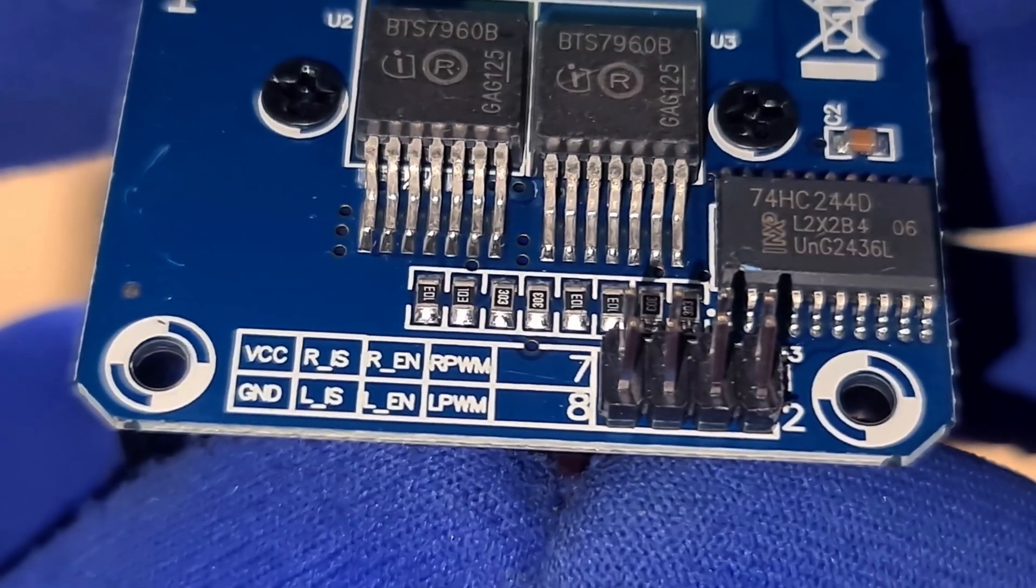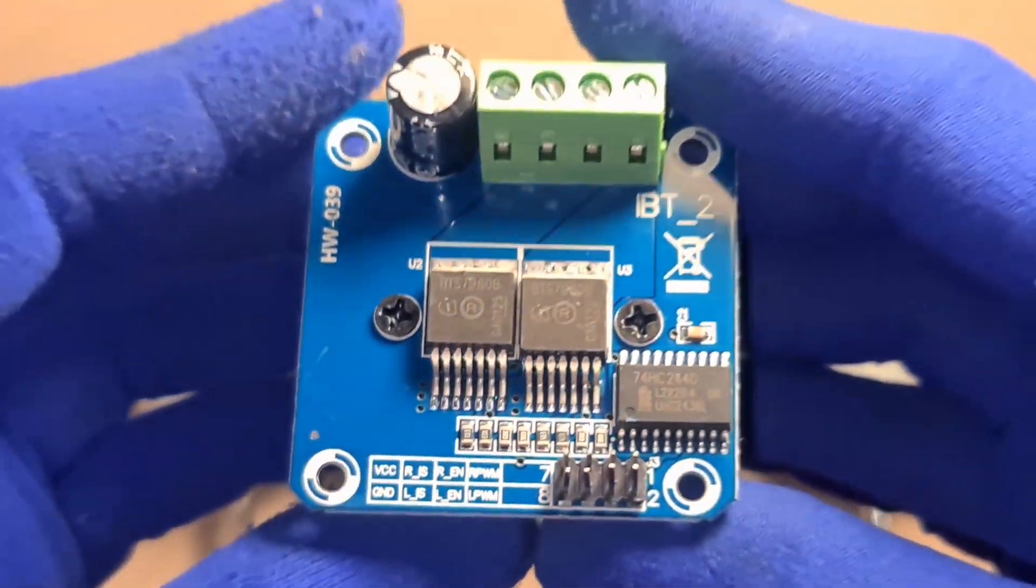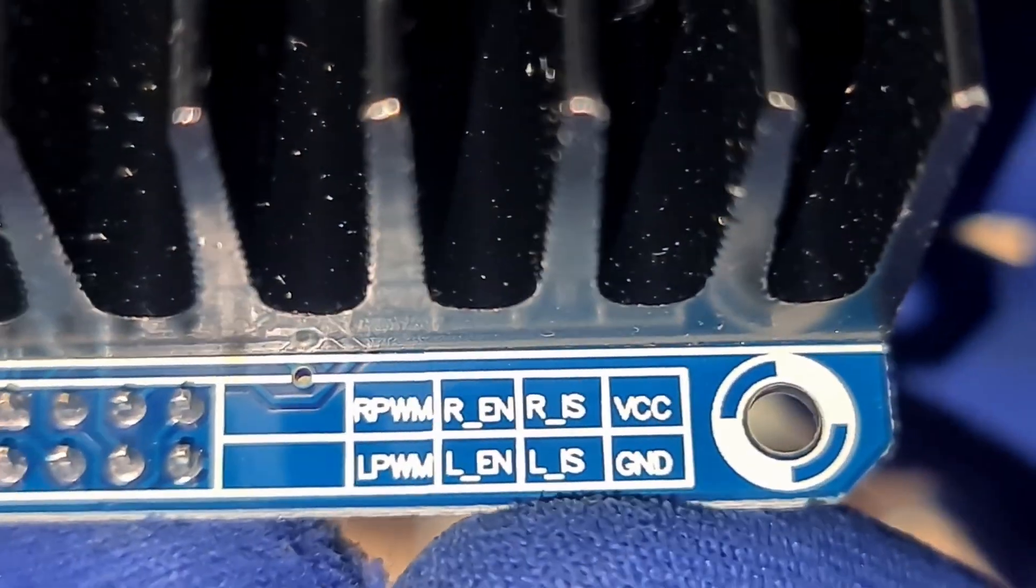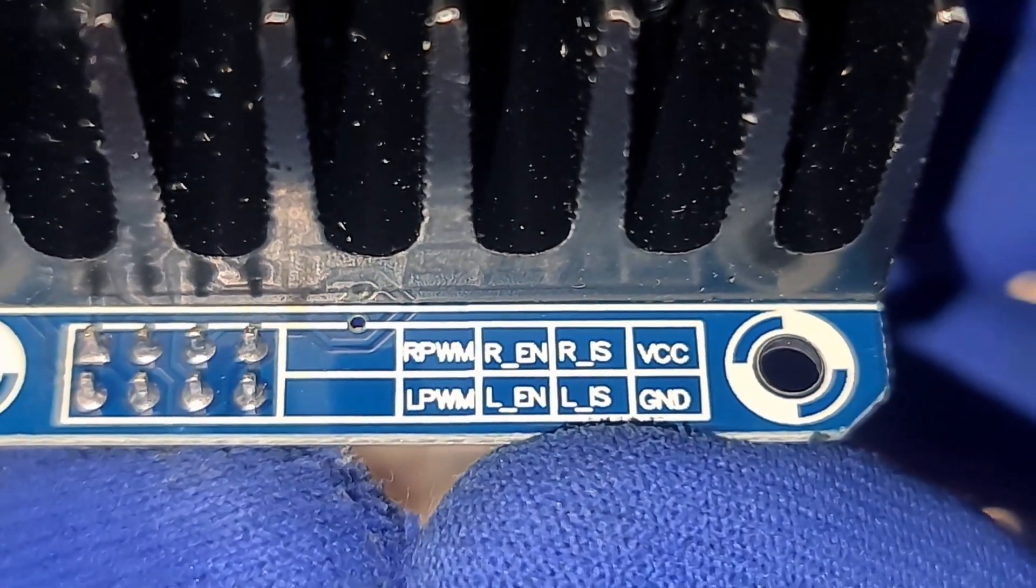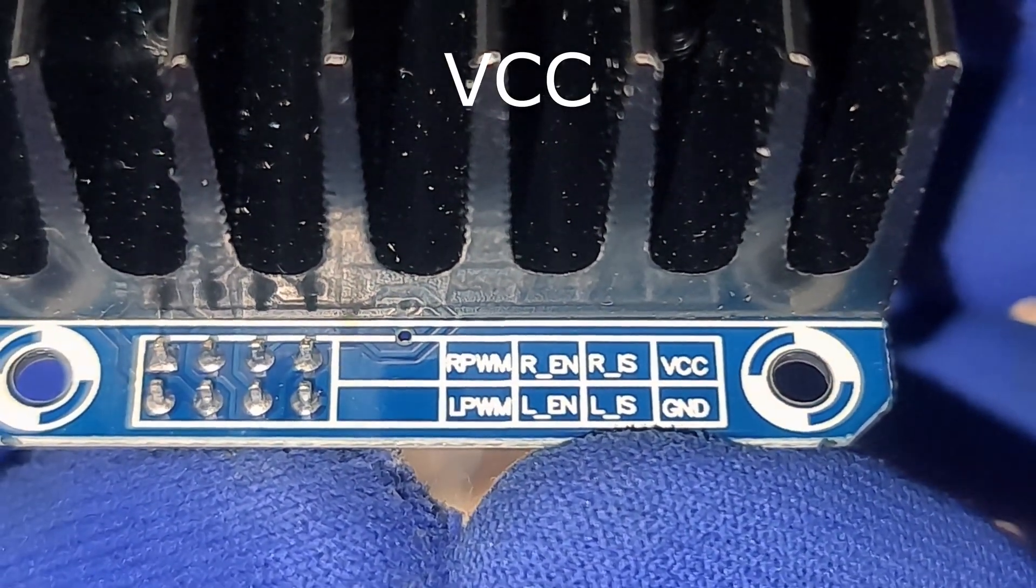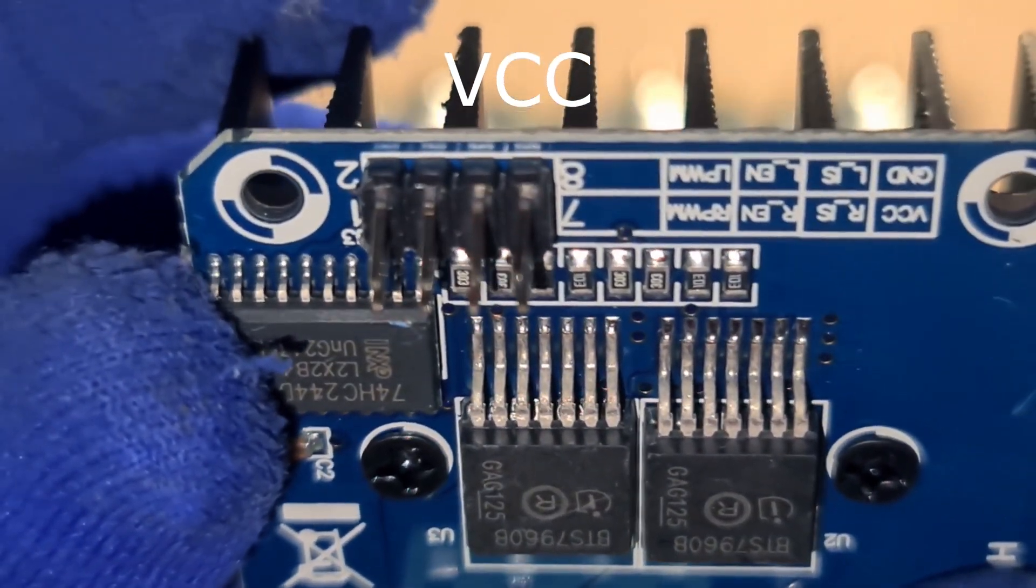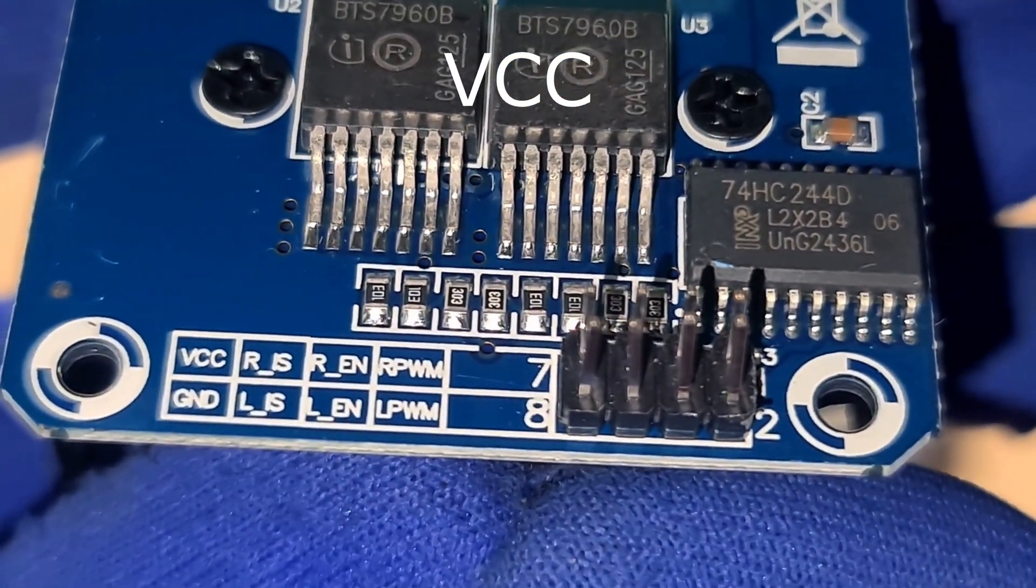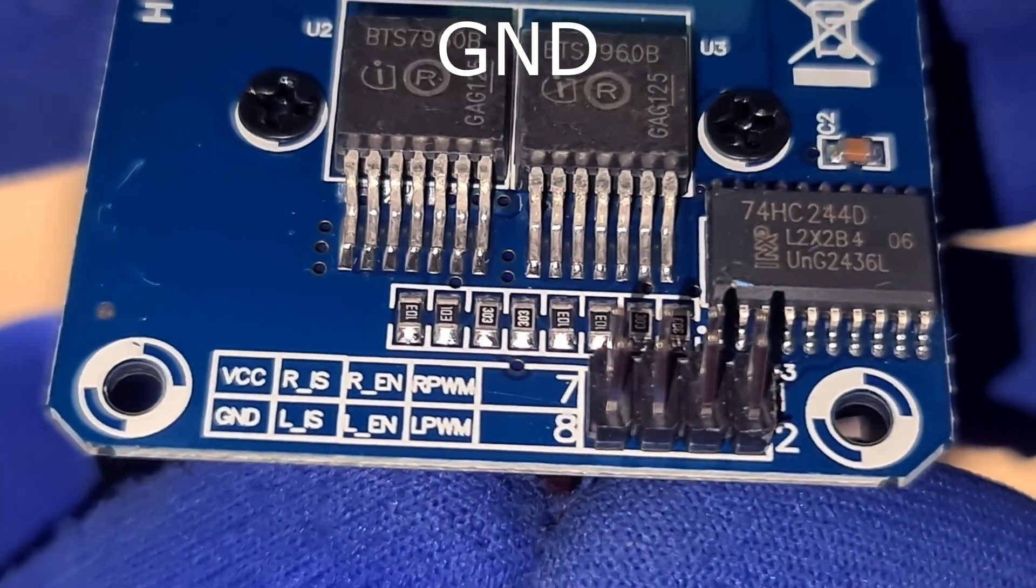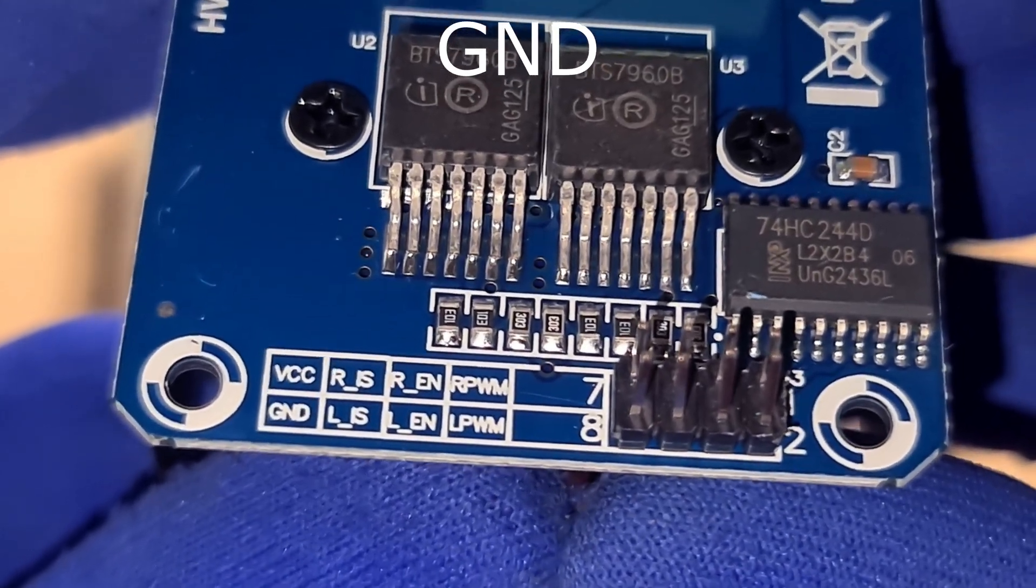Now let's take a closer look at the BTS 7960 motor driver and understand what each pin actually does. Because knowing this will save you hours of debugging. Starting with the control pins, these are the ones you connect to your Arduino or whatever controller you're using. Logic control pins: VCC. This is where you give the driver its logic power. It needs a clean 5 volts. And no, the driver doesn't generate this by itself. So we connect the 5 volts from the Arduino Nano here. Ground. This is the ground connection. You must tie this to your Arduino ground to complete the circuit.